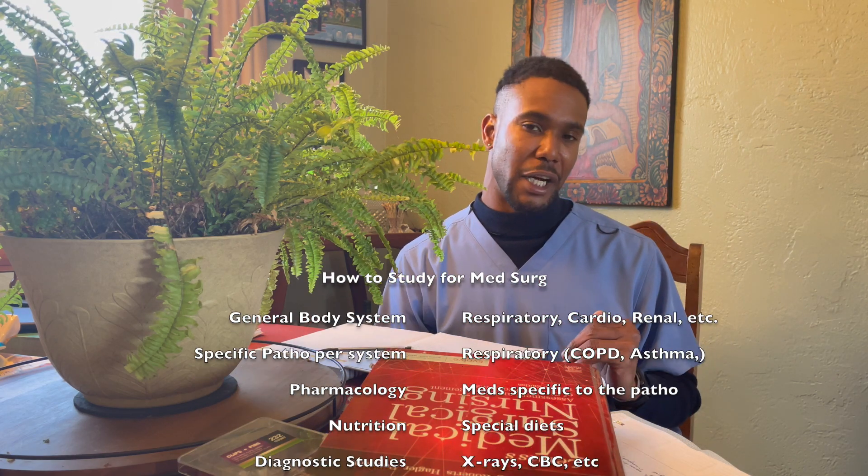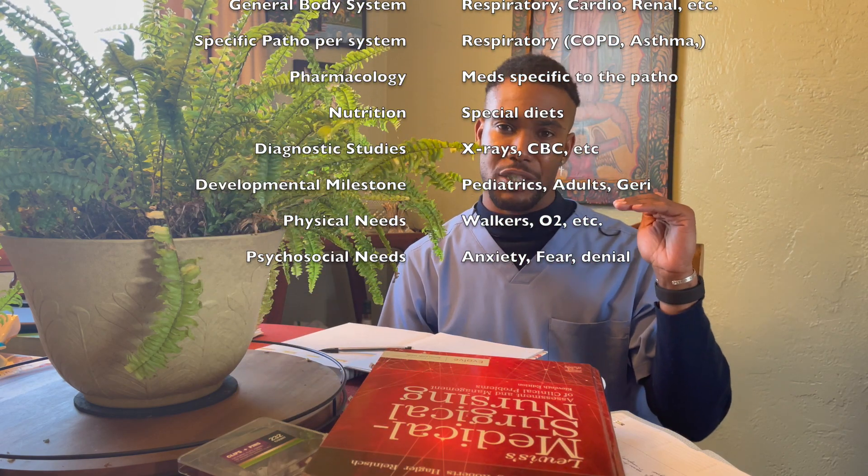To recap how to study for med-surg: one, identify the general patho — is it cardio, respiratory, hematology, oncology, neuro, or musculoskeletal? From there, identify the specific patho — is it pneumonia, asthma, COPD, or emphysema? Then determine what medications go with that patho, what diet the patient would be on, and what diagnostic studies are needed to diagnose it. Next, identify which client you're treating — adult, pediatric, or geriatric. Consider what psychosocial needs they're exhibiting — are they anxious, in denial, or sad? And finally, what physical care do you need to provide that client with?